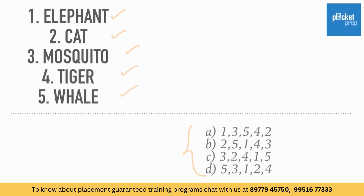We know that whale is the largest. So, whale can be either first or last. If we consider whale as first, that is we are arranging these words in decreasing order, then the second option is three, that is mosquito, which is wrong. So, this option is also wrong. If we arrange these words in increasing order, then whale should be at the last. And before whale is one — elephant.